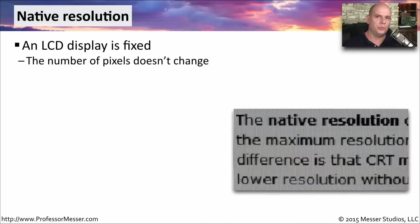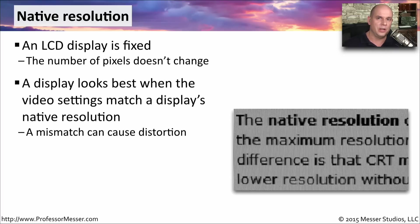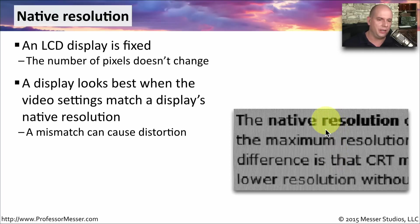The number of pixels on an LCD display is a fixed number — a certain number in the width and a certain number in the height — and it doesn't change depending on how you configure the display. The display will look best when both of those numbers are used at their native values. If you use a different resolution, your display will attempt to show it, but because the pixels don't match up exactly, you will see some distortion. You can see an example of this distortion — the R on one line looks different from the R on another line, and that difference is caused by the monitor trying to adjust for a non-native resolution.